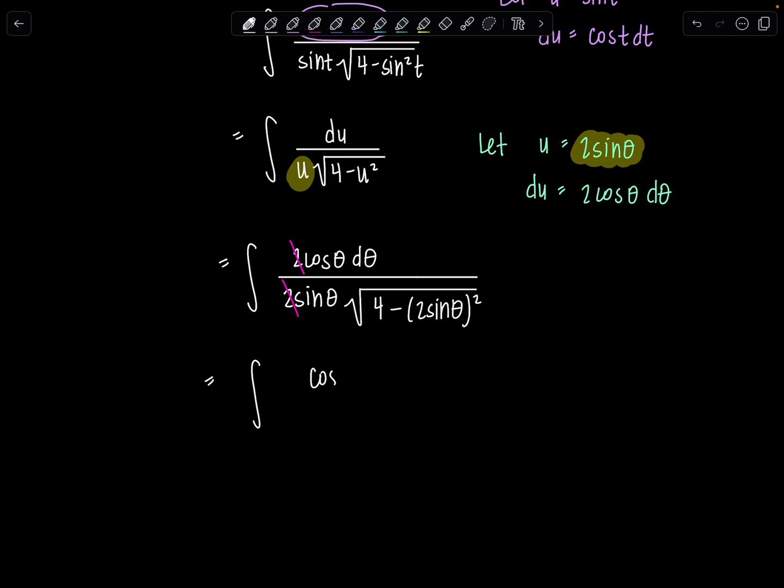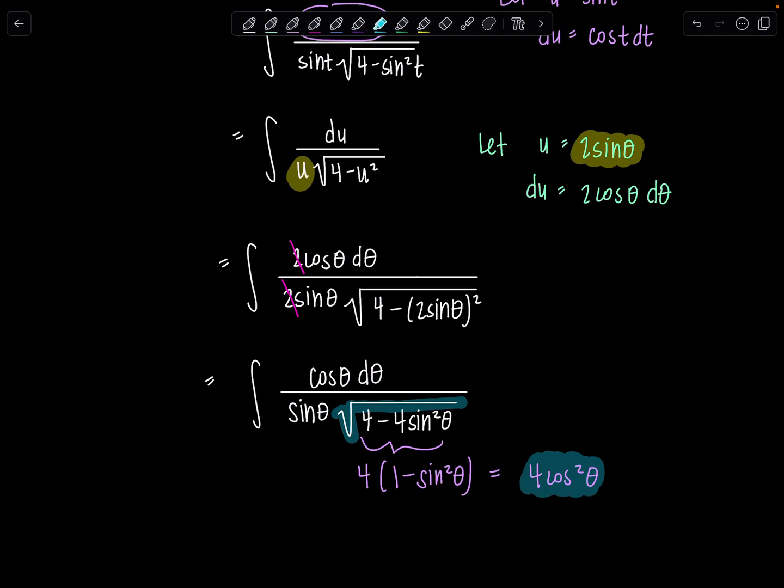Then we have integral cosine theta d theta over sine theta times the square root of 4 minus 4 sine squared theta. And remember, the whole point of doing trig sub is so we can simplify these expressions with our Pythagorean identities. So if I factor out the 4, then I have 1 minus sine squared theta. So this is 4 cosine squared theta, which is sitting underneath this radical sign right here. So if we take the square root of 4 cosine squared theta, remember, that's absolute value, 2 cosine theta.